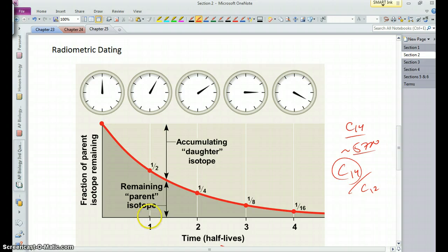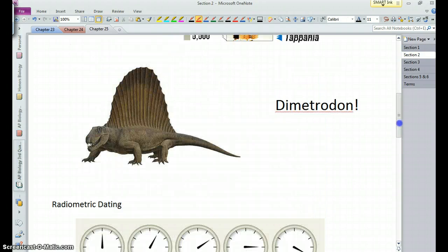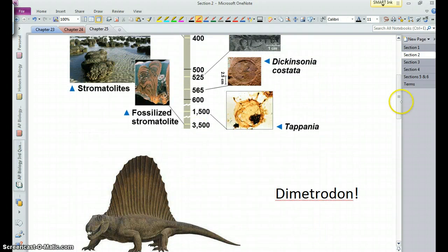And this decay, this breakdown of these isotopes, happens at a constant rate. So the time to go from having the full amount to the half amount is one half-life. From half to one quarter is a second half-life. And that amount of time is the same amount. So we can use this technique to date things and figure out how old some of these oldest fossils are.